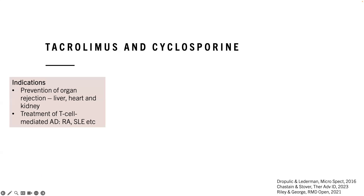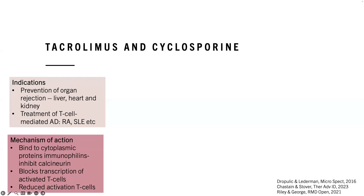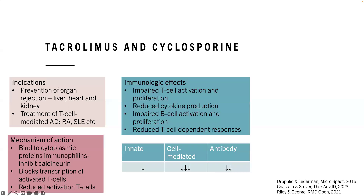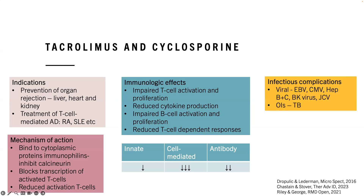Calcineurin inhibitors — tacrolimus and cyclosporine — are used for treatment of some T cell-mediated autoimmune diseases, but mostly for prevention of organ rejection. They bind to cytoplasmic proteins called immunophilins, thereby inhibiting calcineurin, which blocks transcription of activated T cells. The immunological effect is focused on T cell response and T cell-dependent B cell responses — impaired T cell activation and proliferation, reduced cytokine production, and some impaired B cell activation. Infectious complications are mostly viral, with risk of TB. BK virus is quite significant, and JC virus is also a risk.